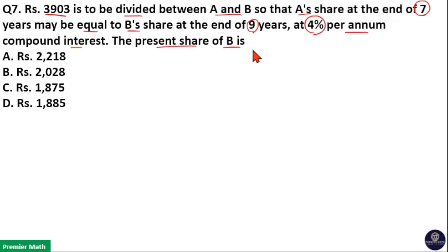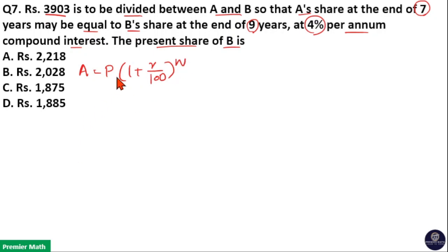We need to find the present share of B, that is the principle of B. The amount formula is: Amount = Principle × (1 + R/100)^N. Here, R is the rate of interest = 4%, so 4 goes 25 times into 100, making 1 + 1/25 = 26/25.